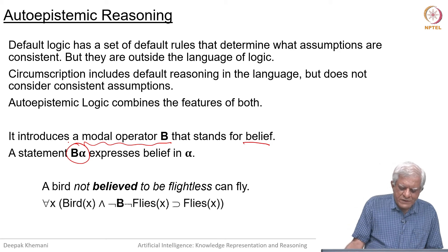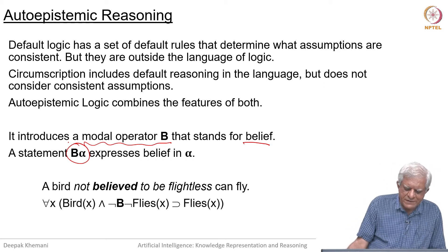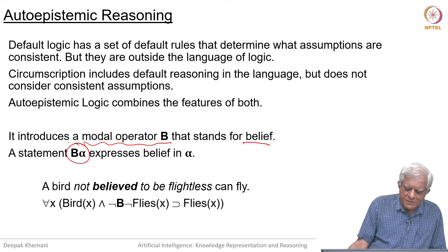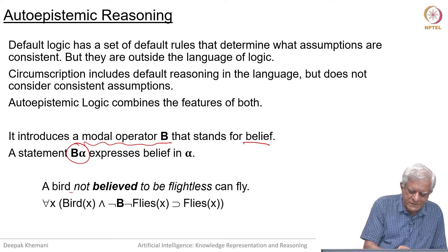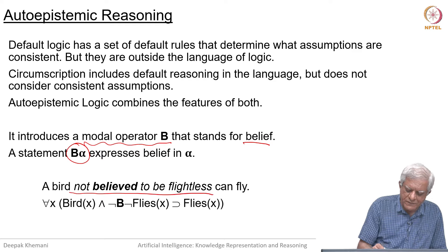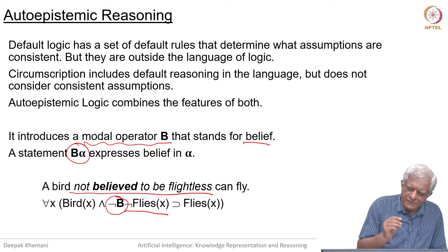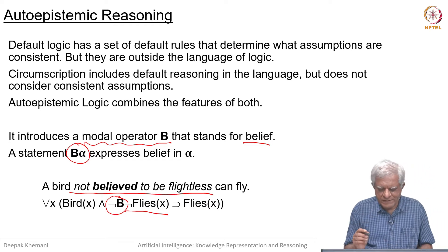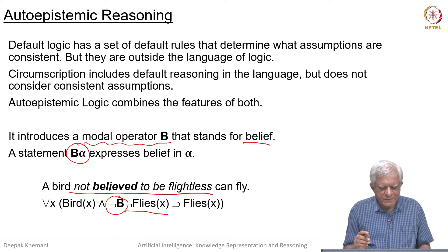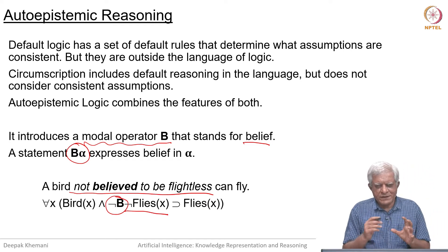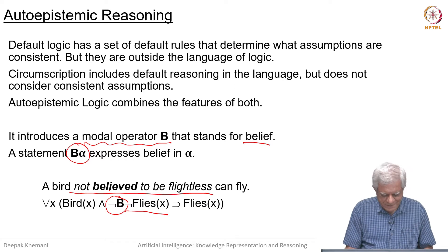In auto-epistemic reasoning, we would say that a bird not believed to be flightless — so this is the important part: not believed to be flightless. This part is 'not believed' — you do not believe that it cannot fly. If you do not believe that it cannot fly, then you can enforce that it can fly.